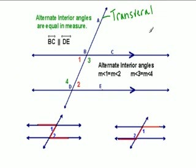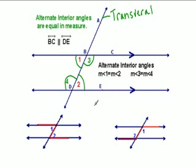This transversal line creates angles with our parallel lines. You can see that it has created angle 3, angle 1, angle 2, and angle 4.